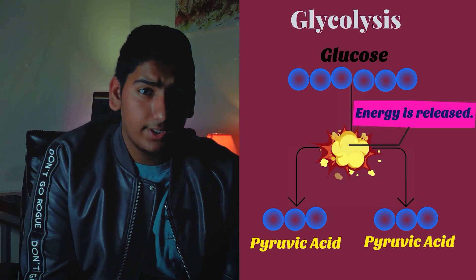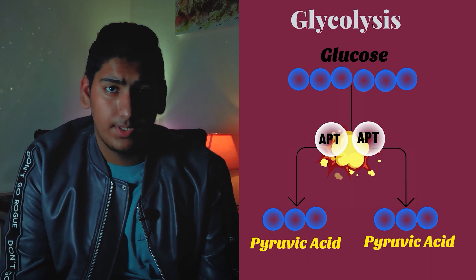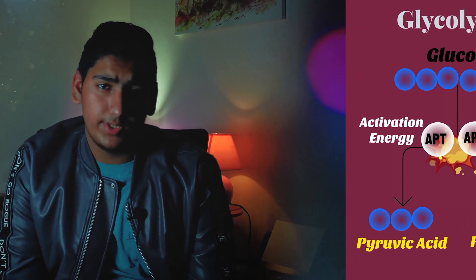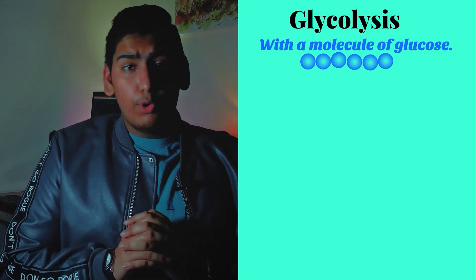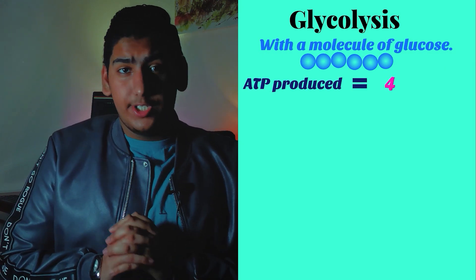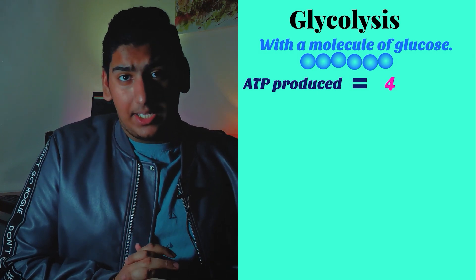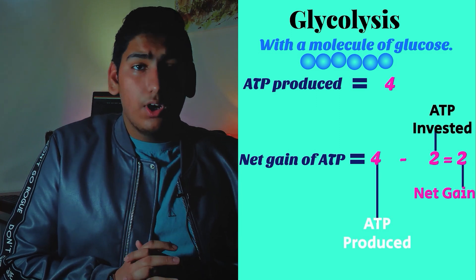To start glycolysis, a cell invests two ATP molecules as an activation energy. At the end of glycolysis, four ATP molecules are produced. Hence, a cell gets a net gain of two ATP molecules from a molecule of glucose.